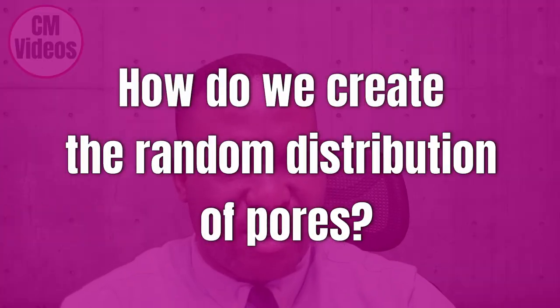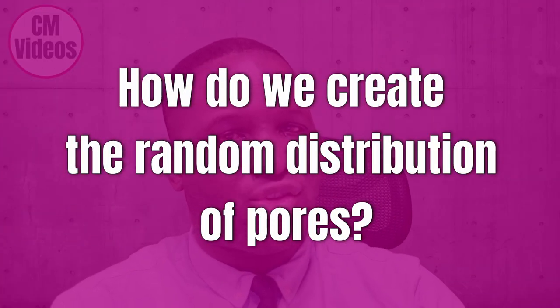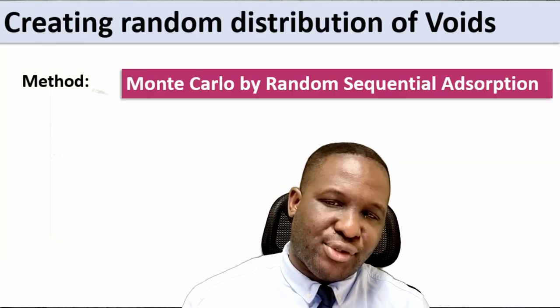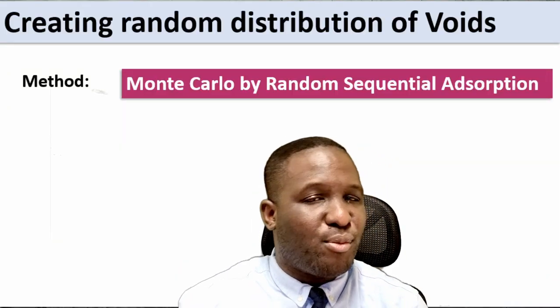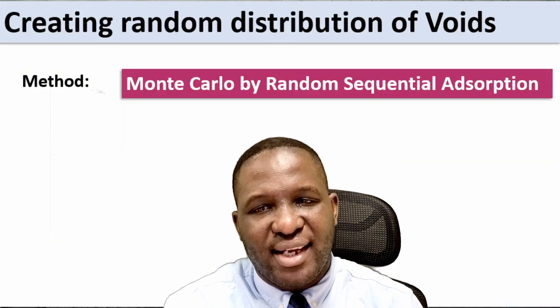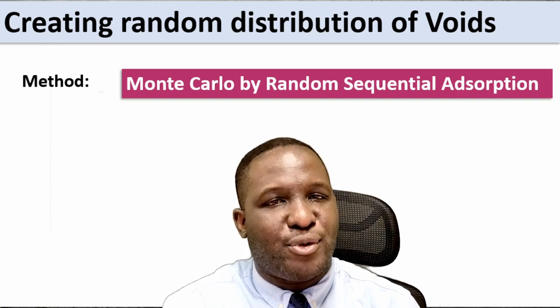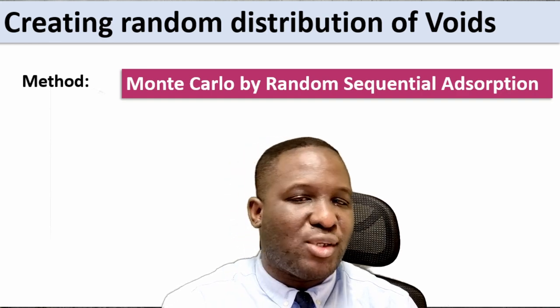There is a relationship for calculating the void volume fraction. Rearranging the equation, you can calculate the number of voids — I've used a round function to get an integer. To create the randomness in void placement, we use the Monte Carlo approach with random sequential adsorption. I've put a video in the description if you want to understand more about this approach.